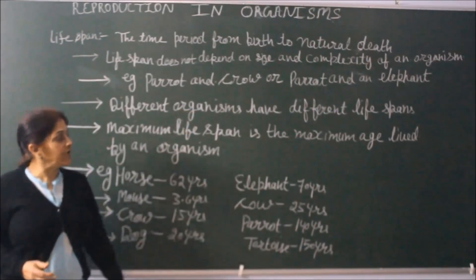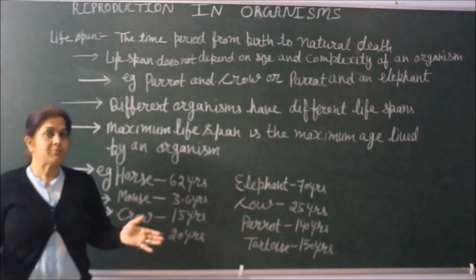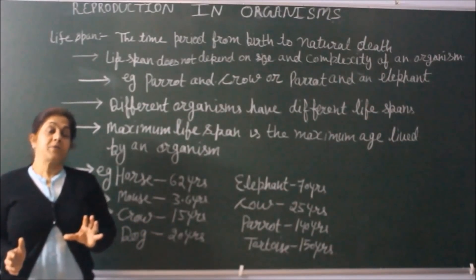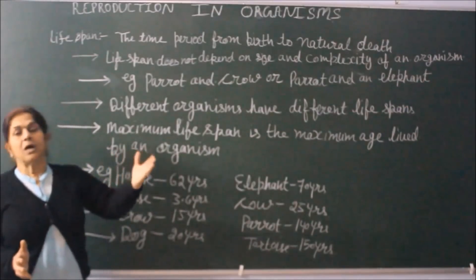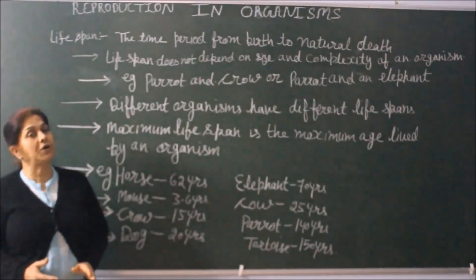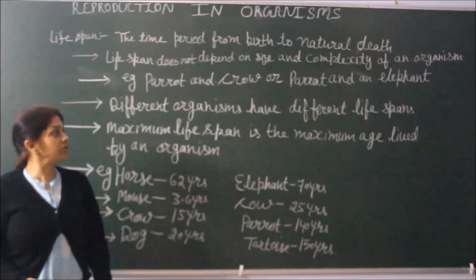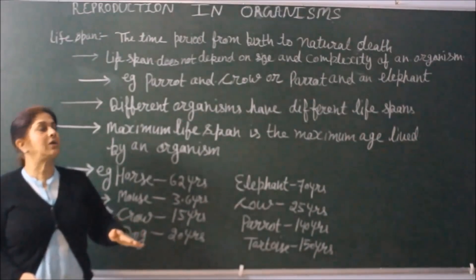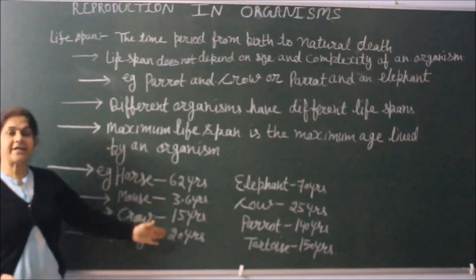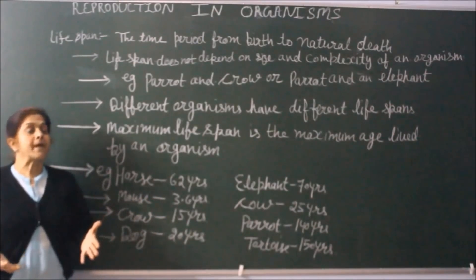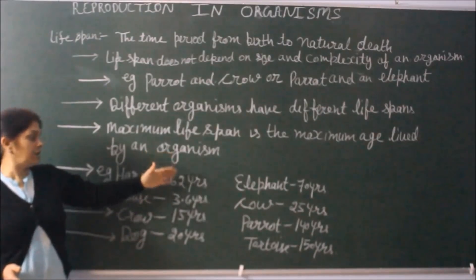If we compare parrot and elephant: the parrot is small with a lifespan of 140 years, but the elephant is one of the largest animals, yet has a lifespan of only about 60–70 years. So there are different lifespans mentioned on the blackboard and in your NCERT book. You should keep these in mind — whether the organism is simple or complex.